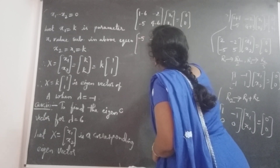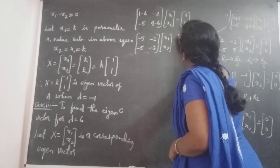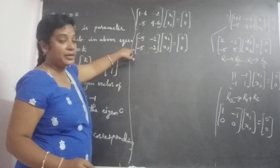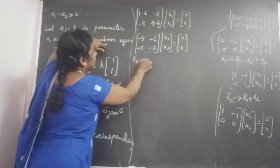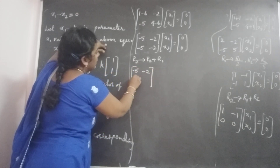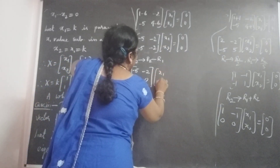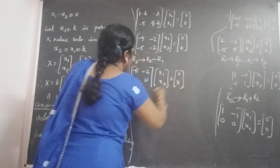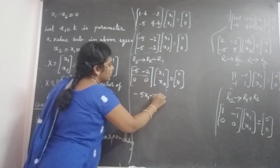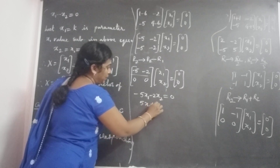Simplifying: 1 minus 6 is minus 5, and 4 minus 6 is minus 2, giving the matrix [-5, -2; -5, -2] times [x1; x2] equals [0; 0]. Using row elementary operations to reduce to echelon form: apply R2 = R2 minus R1. Since both rows are the same, the second row becomes [0, 0]. The first row gives the equation: minus 5 x1 minus 2 x2 equals 0, that is 5 x1 plus 2 x2 equals 0.